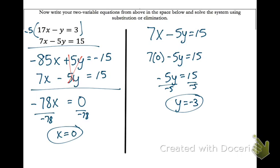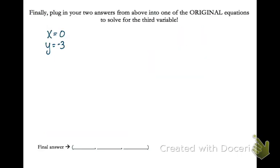Now we're ready to move on to the next box. Okay, this box says finally, plug in your two answers from above. We got x equals 0 and y equals negative 3 into one of our original equations. So look at the top of your paper. We had three equations to begin with. We can pick any of them, it doesn't matter.